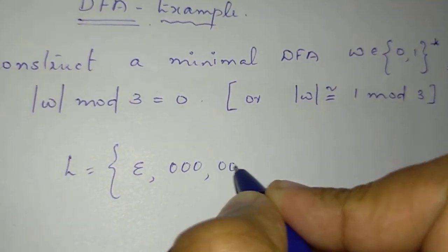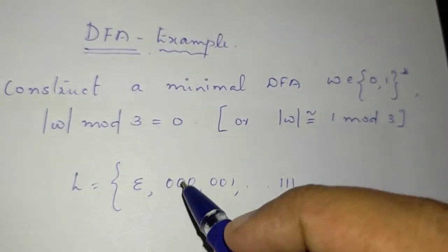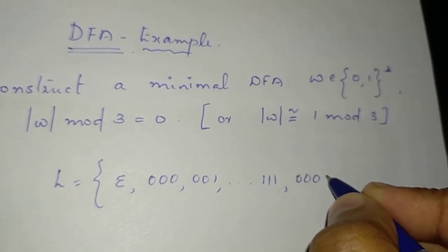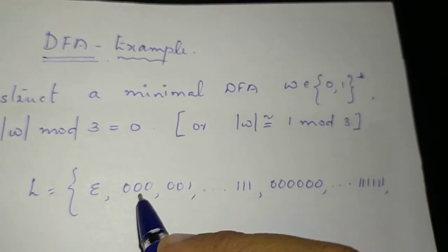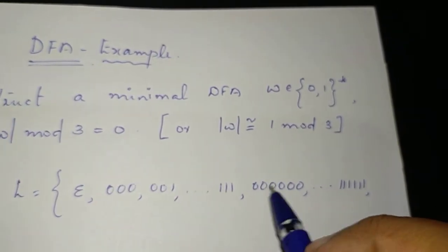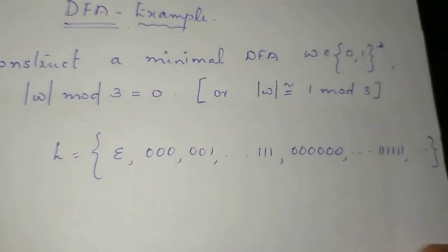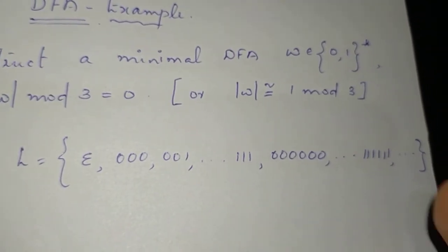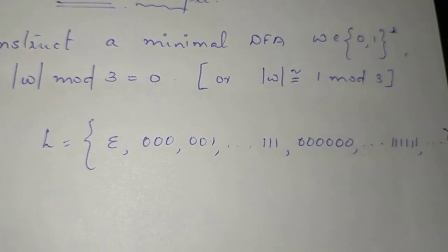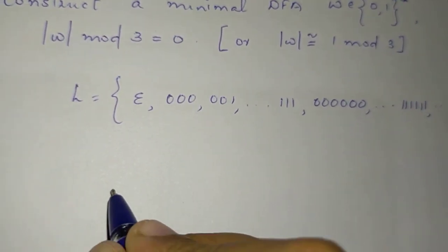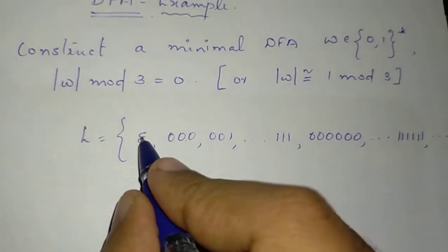So we write strings of length 3, 6, and so on. This is an infinite language, so we will use DFA to construct the corresponding language. We will use the infinite language with 0.